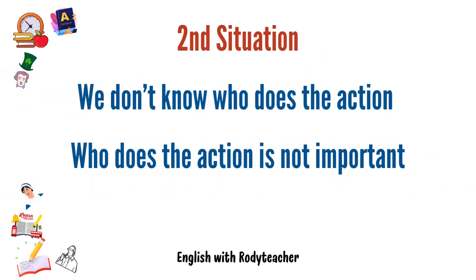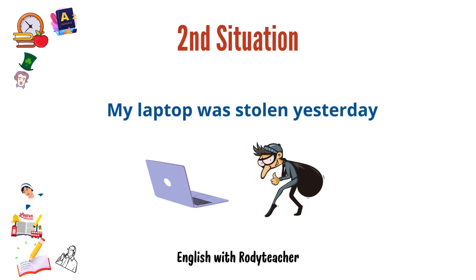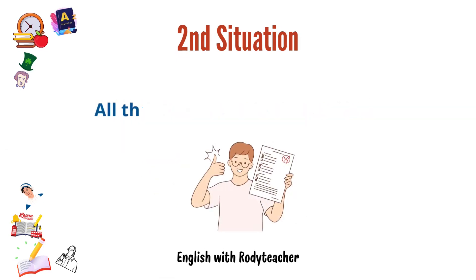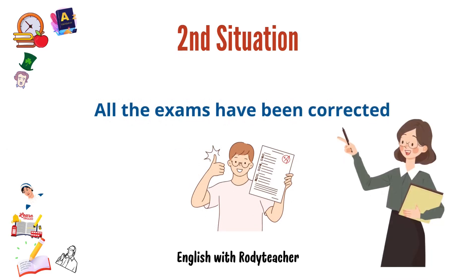First situation: when we want to emphasize the action of the person that carries out that action. For example, if we take the active sentence, 'My friend has uploaded a new episode of Mr. P,' we give relevance to the fact that it is my friend who has done the action.